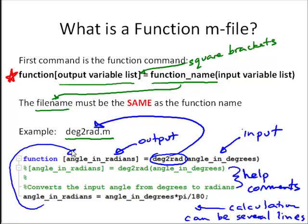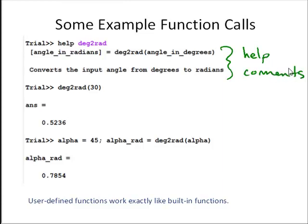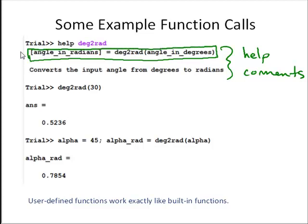Here are some examples of how you can run this function. We can type help deg2rad just like we would type help sin for a MATLAB function, and the help comments show up. One important thing in the help comments for a function mFile, slightly different from a script mFile, is we really want to include information on how we call the function — what are the input variables and what are the output variables. This will become more clear as we talk about multiple input and output functions in a moment.